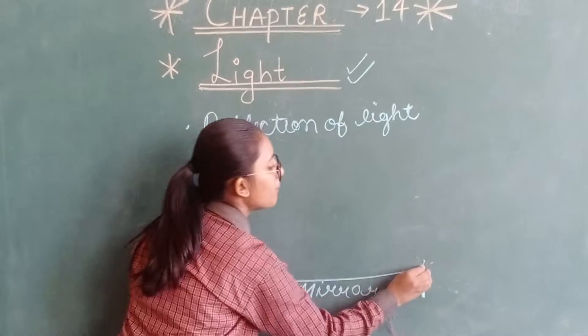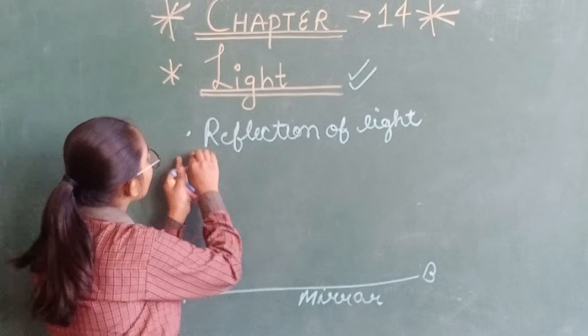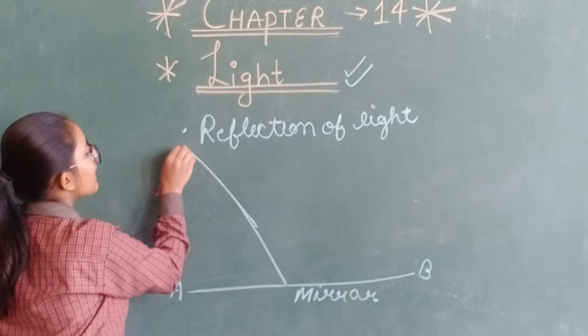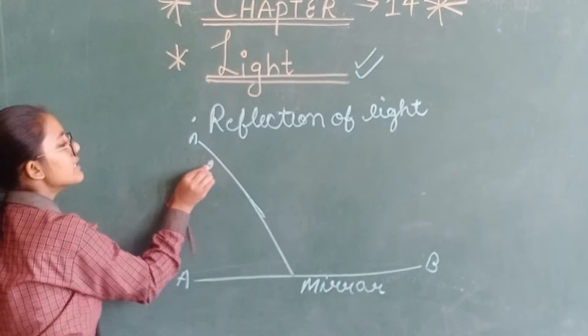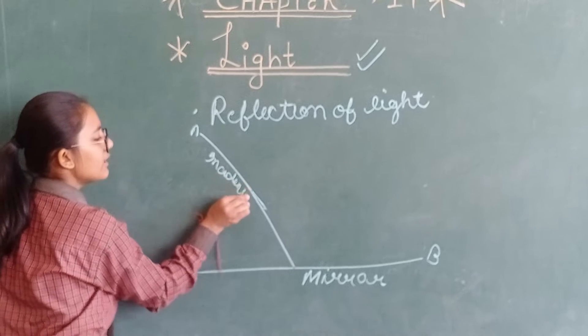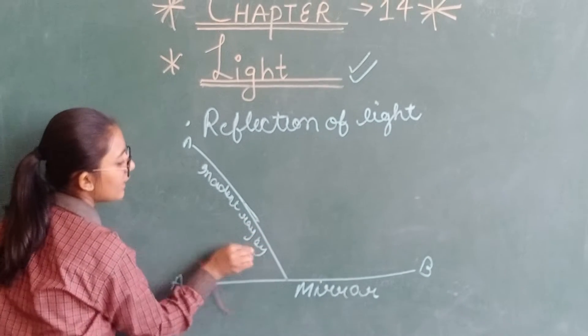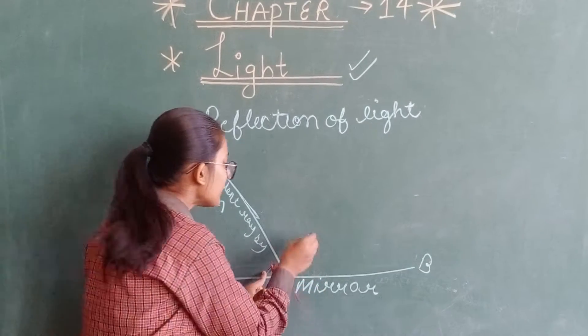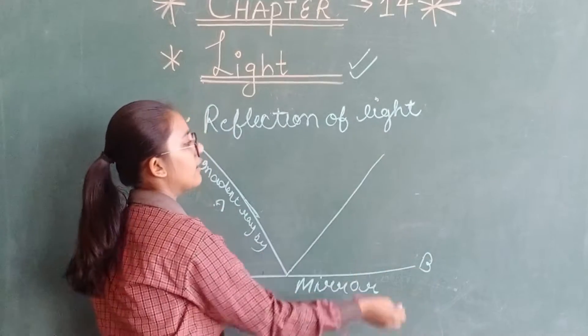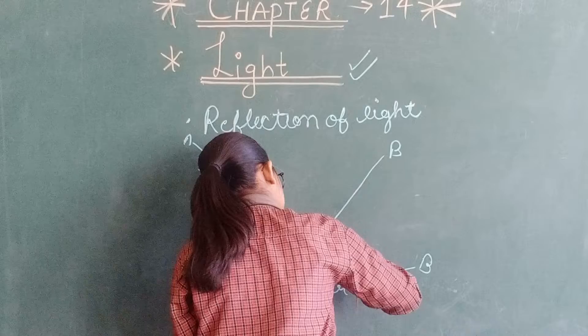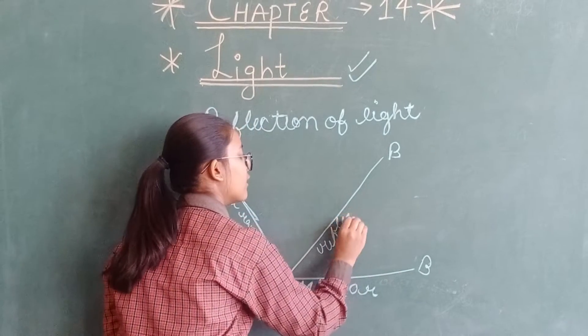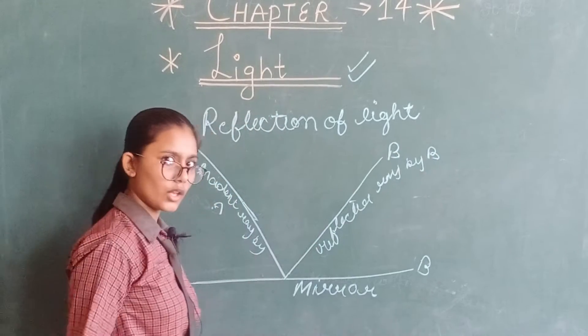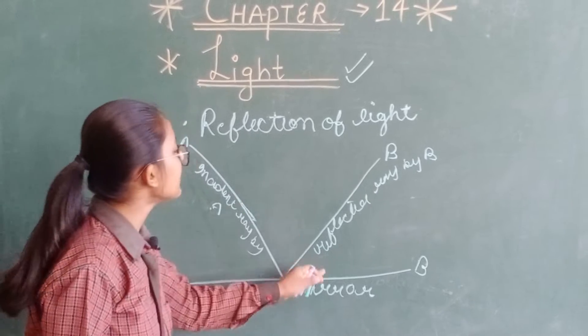We can name it A, B. Suppose a ray is coming on the surface of the mirror. We can name it as A and we will call it incident ray. A ray is falling on the surface of the mirror. Then the mirror will reflect a ray. We will say that it is reflected ray, B. This ray is falling and this is reflecting.